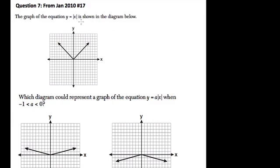So here they give us the graph of this equation, y equals the absolute value of x. It's an absolute value function. They want to know which diagram could represent a graph of the equation y equals a times the absolute value of x, when a is between negative 1 and 0.